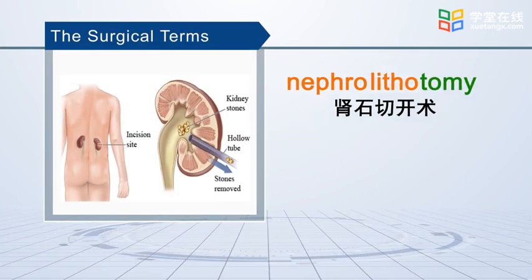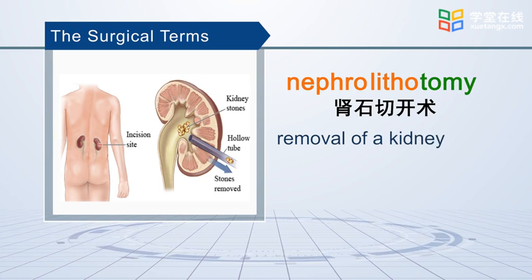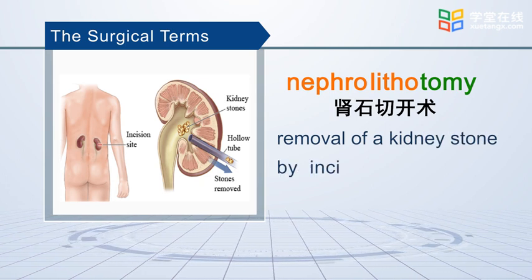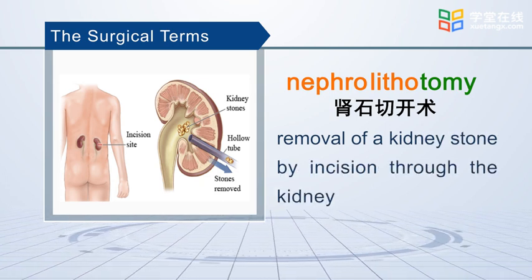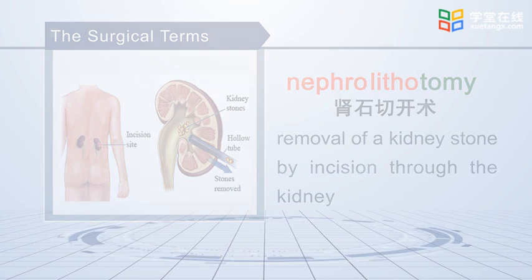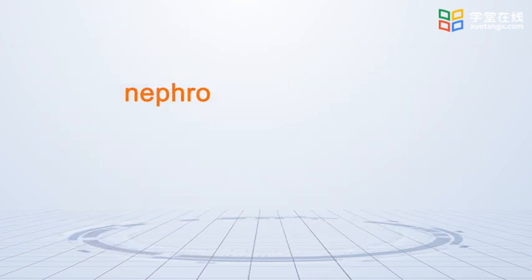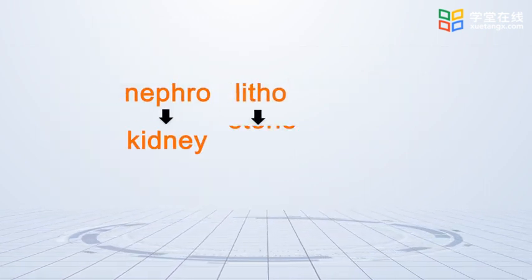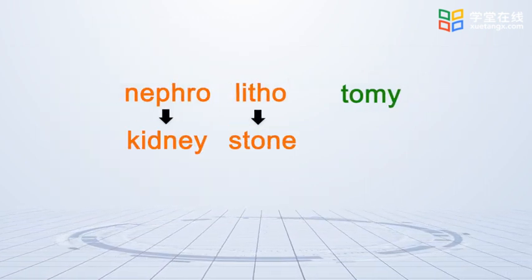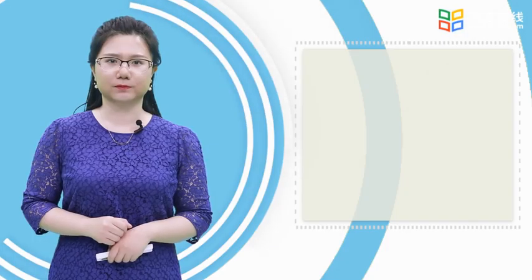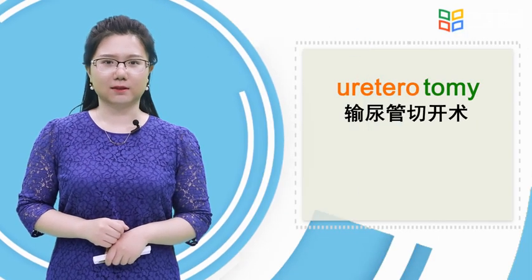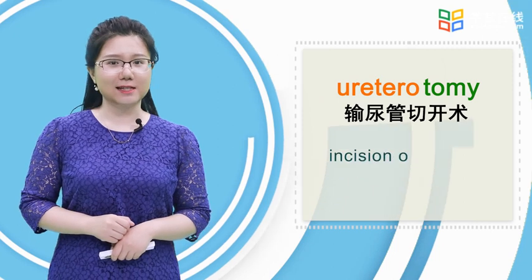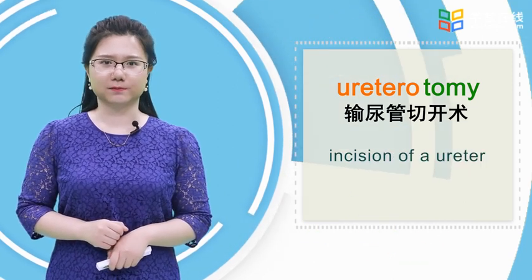Nephrolithotomy is the removal of a kidney stone by incision through the kidney. Ureterotomy means incision of a ureter.